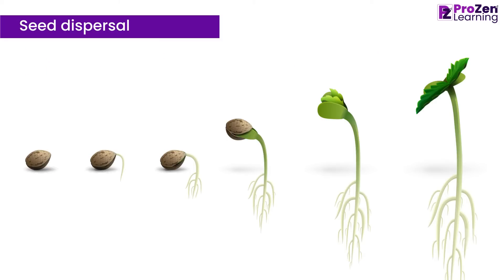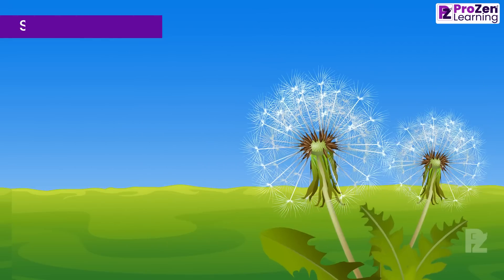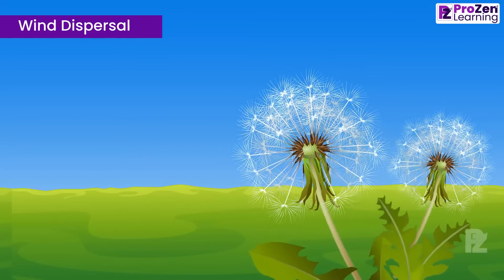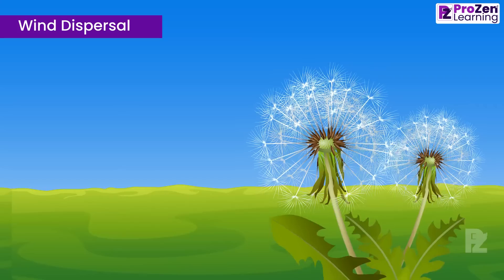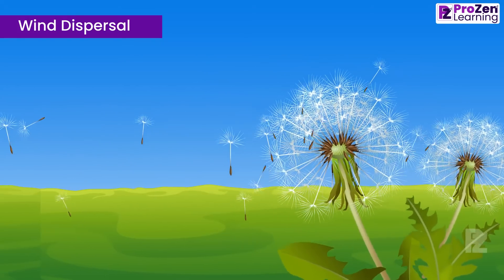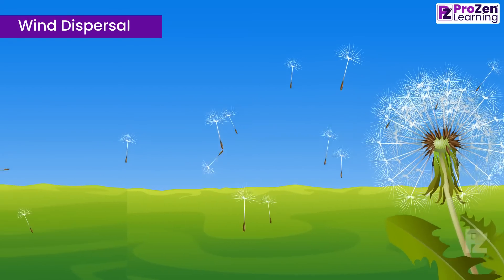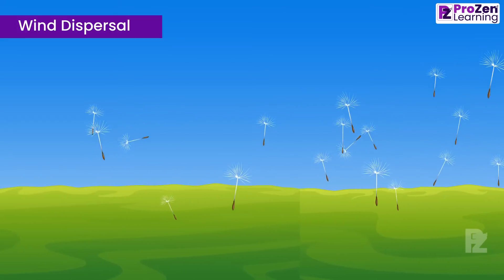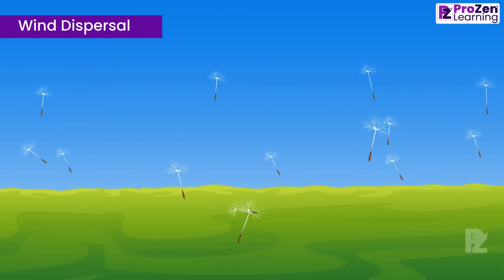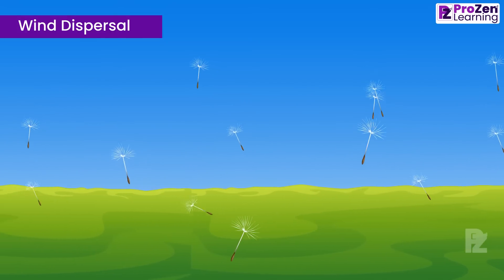There are several fascinating methods by which seeds are dispersed. Let's explore a few of them. Wind dispersal: some plants have evolved lightweight seeds equipped with structures that catch the wind, such as feathery plumes or wings. These seeds can be carried great distances by even the slightest breeze.